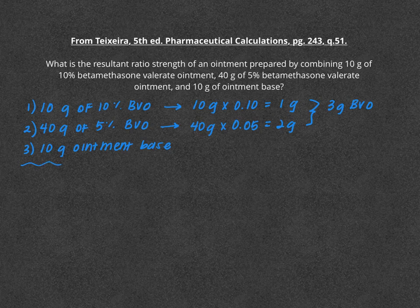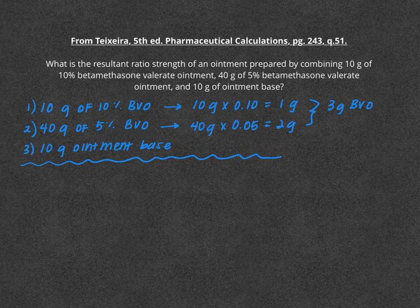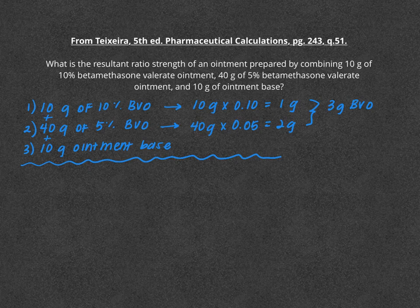The next thing we need to do is determine our overall total volume for all three of these different ointments. That is simply just a matter of adding these three up, so 10 grams plus 40 grams plus 10 grams is going to give us 60 grams total ointment.